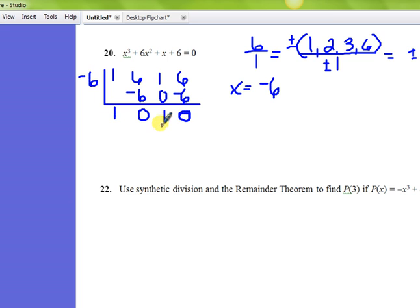Remember, if this starts with a three, then this variable starts with a two—the degree is two—and that's going to be 1x² + 0x + 1.